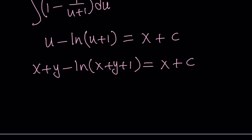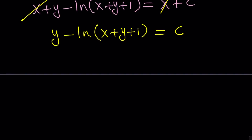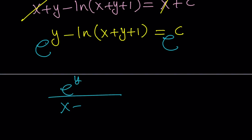Now we cancel out the x from both sides and we have something with y — not y by itself, but a mixed expression. One thing we can do is raise e to the power of both sides, since we have a natural log, and that will simplify things greatly. So we apply e to the power of both sides, giving us e to the y divided by e to the ln of x plus y plus 1, which is just x plus y plus 1. And e to the c is another constant, let's call that k.